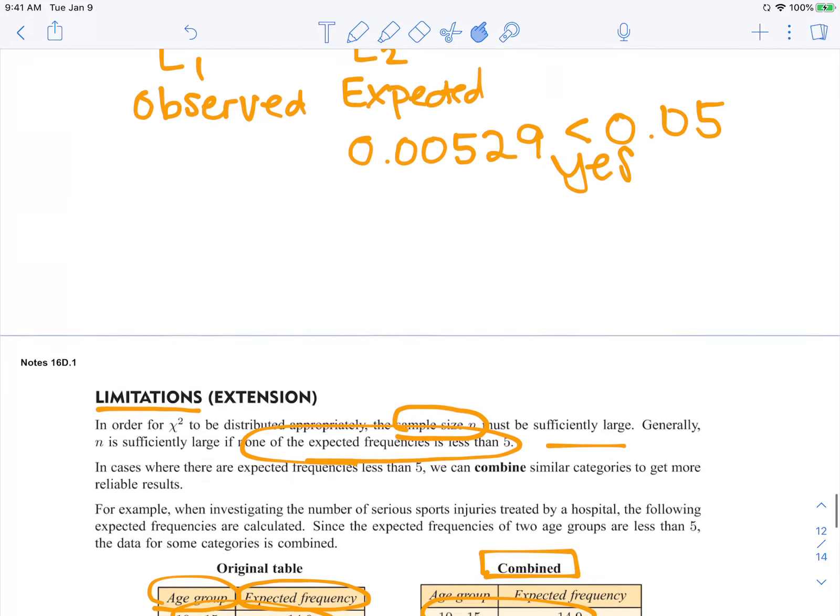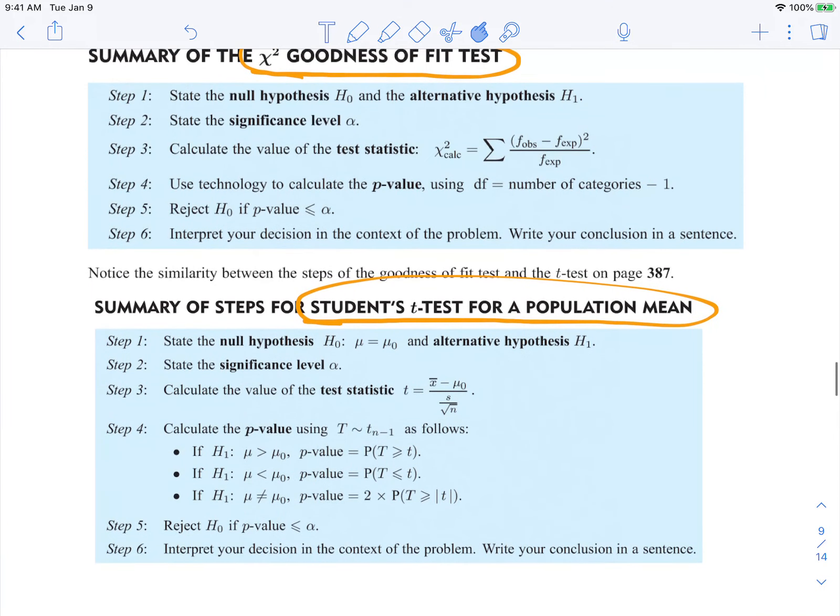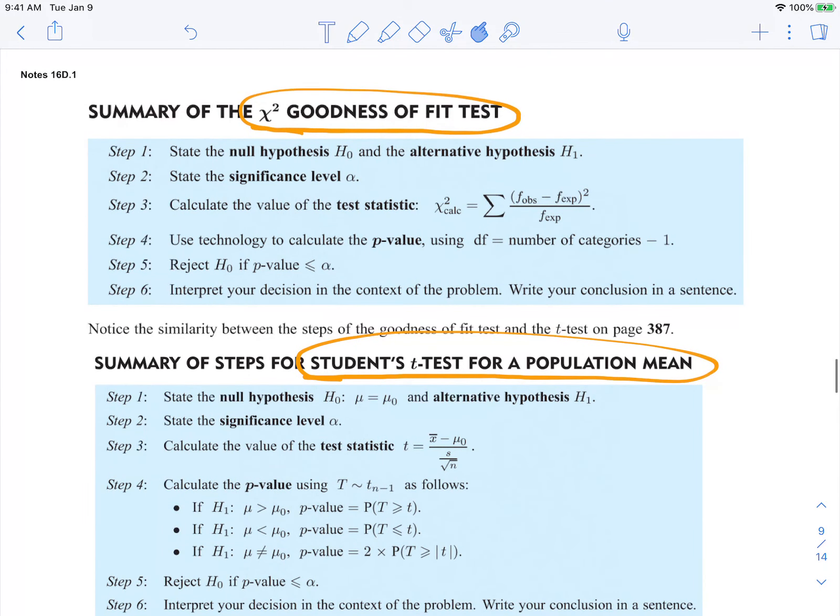Then what you would do is you would go through the six steps with the combined new chart.